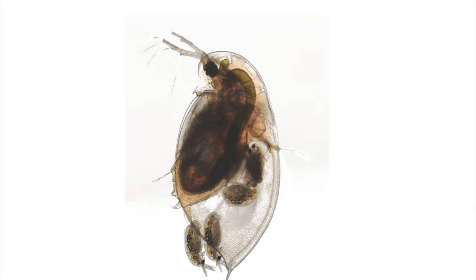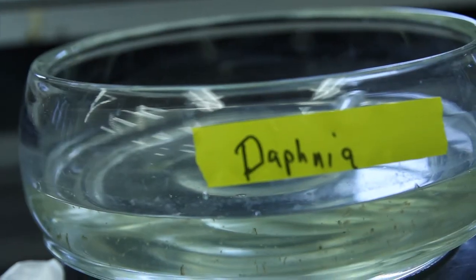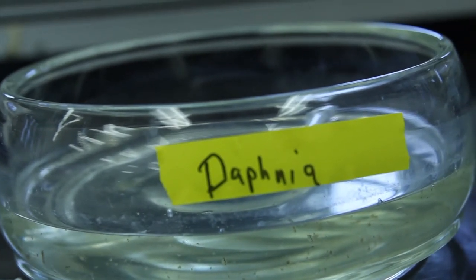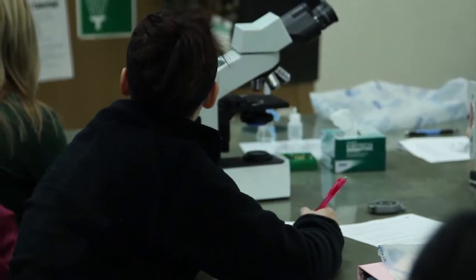And what do you notice about its body? It's transparent. It's clear. So if we are interested in studying the heart rate, and we want to use a model organism, this is really perfectly suited to our needs, because since the outer part of its body is clear, this is the heart, we can actually view the heart beating.